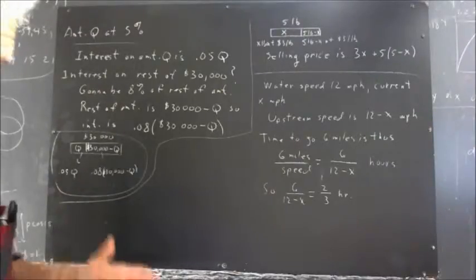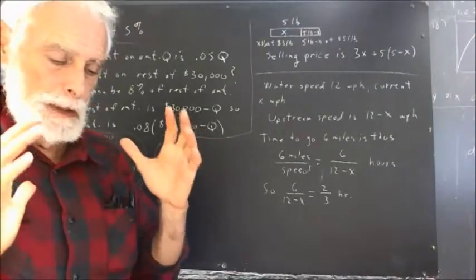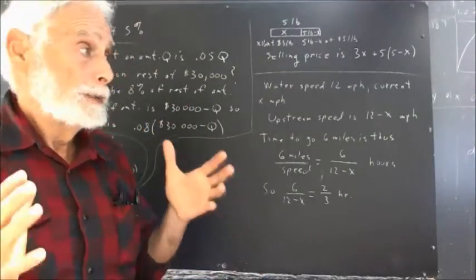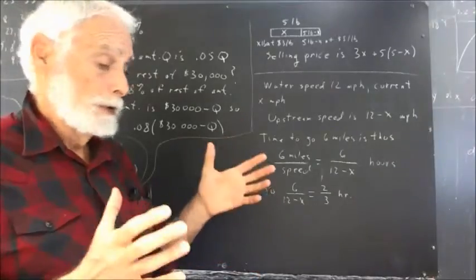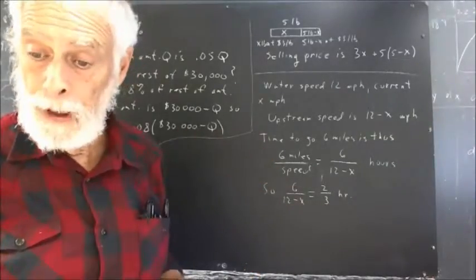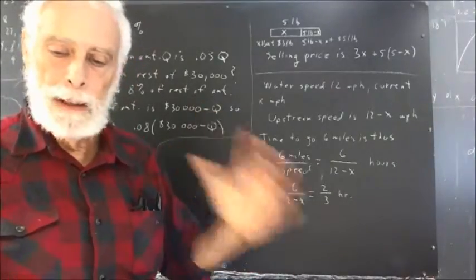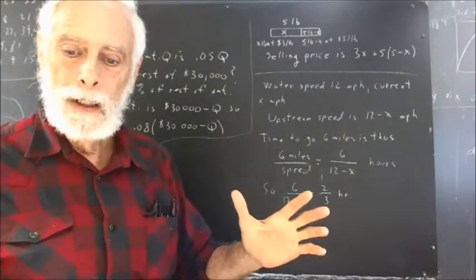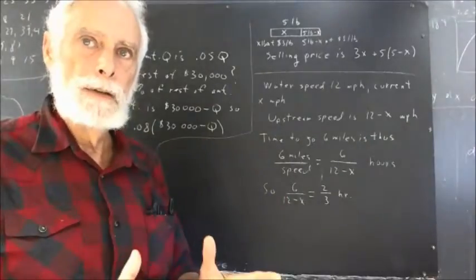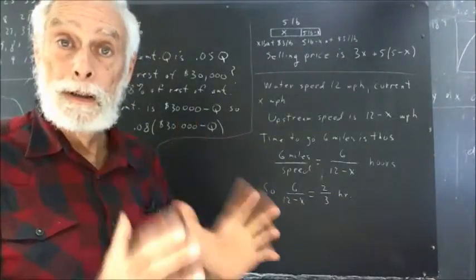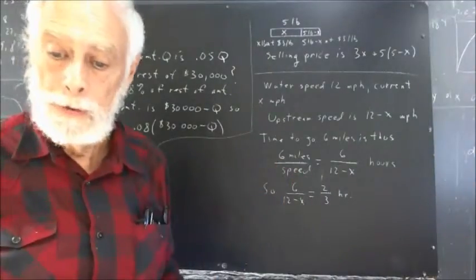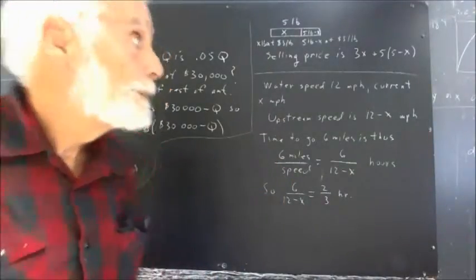The next question is actually quite similar. We have peanuts that would be sold at $3 a pound, and we have cashews that would be sold at $5 a pound. We're going to mix up 5 pounds of some kind of a mixture. So if X is the amount, or the number of pounds of peanuts, then what's the cost of the mixture in terms of X?